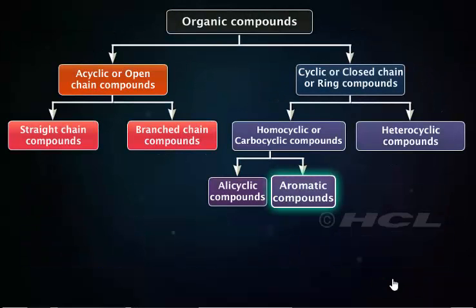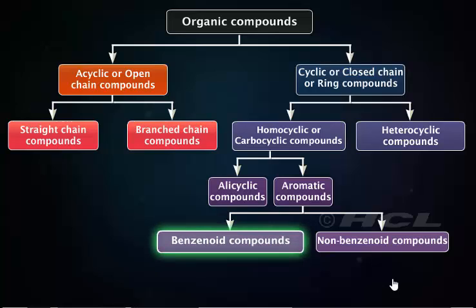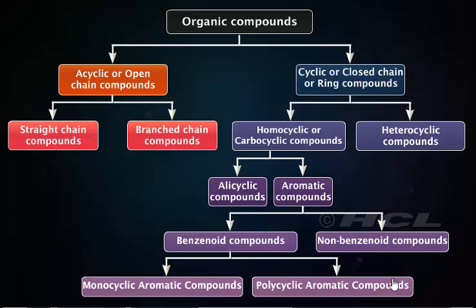Aromatic carbocyclic compounds are a special type of unsaturated compounds. They are classified as benzenoid aromatic compounds and non-benzenoid compounds. The benzenoid aromatic compounds contain one or more benzene rings and their functionalized derivatives. Depending upon the number of fused benzene rings, the compounds may be monocyclic or polycyclic.